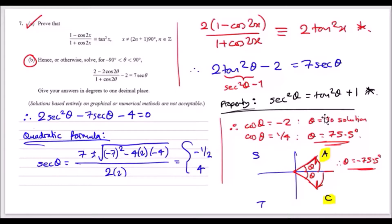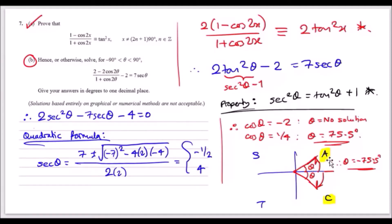To find all solutions in the range minus 90 to 90 degrees, I drew the CAST diagram. Since we're working with a positive cosine value, we use C and A. If we had a negative value, we'd use S and T instead. The angle from the zero position is 75.5 degrees, and going the other way gives negative 75.5 degrees. So the two solutions are θ equals 75.5 and θ equals minus 75.5 degrees.